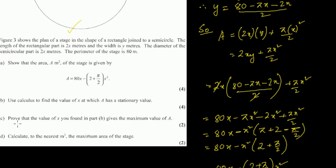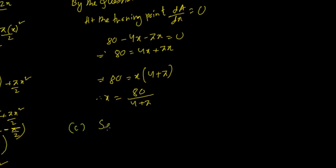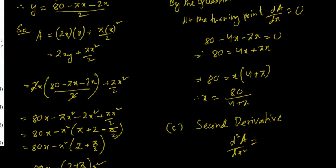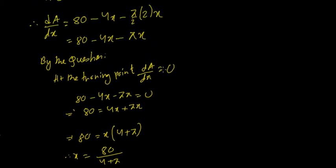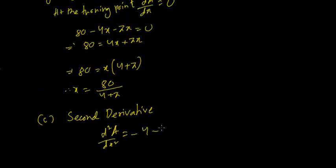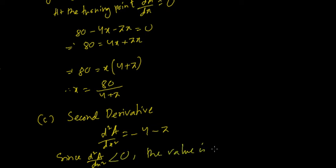To prove it is indeed a maximum, we use the second derivative. Differentiating dA by dx gives d²A by dx² equals minus 4 minus pi. Since pi is approximately 3.14, this is negative. Because d²A by dx² is less than 0, the value is a maximum.